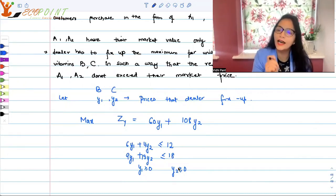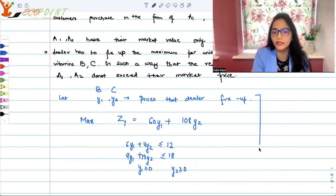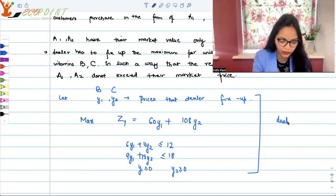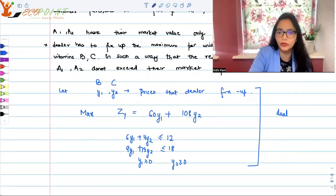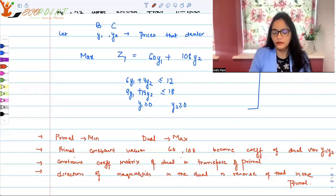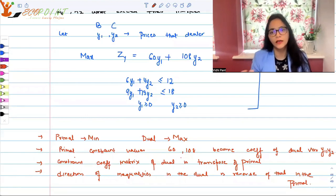This essentially is the idea of dual for any primal. What we have generated will be called dual of this optimization problem or this LPP. What you have observed here? There are few things that you must have observed. Following must be your observations. Your primal was minimization problem, so dual was automatically maximization problem. In the primal, your constraint values were 60 and 108. Now 60 and 108 are actually coefficients of the dual variables y1, y2 in the dual.